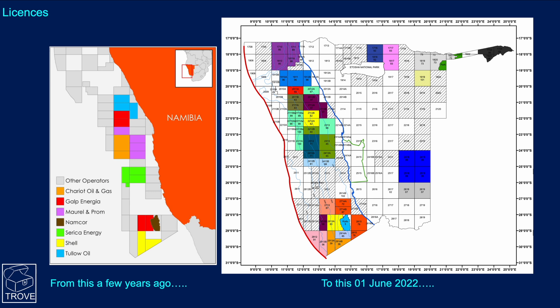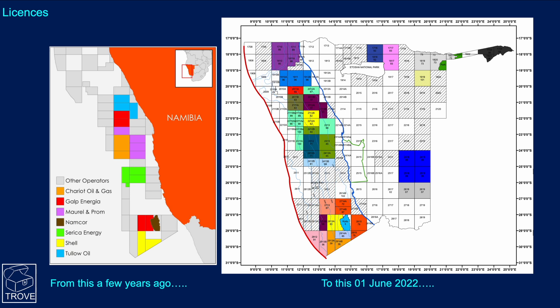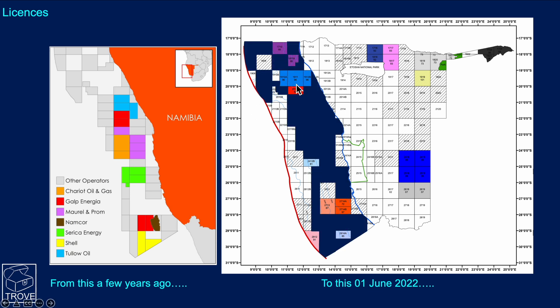Looking at the license map on the left from a few years ago and the most recent map from 1st June 2022, overlaying the outlines shows quite a good churn of acreage. There are some relinquished blocks and some relicensed ones. The coloured blocks are those licensed recently, and the hatched blocks are under negotiation with the Namibian regulator for a license award. Good acreage churn and lots of interest and activity offshore.